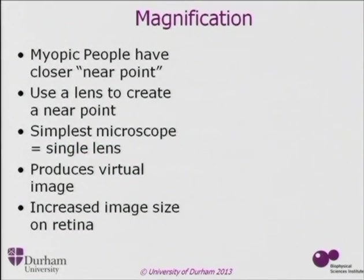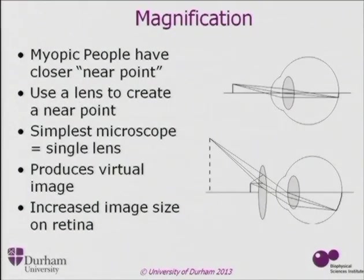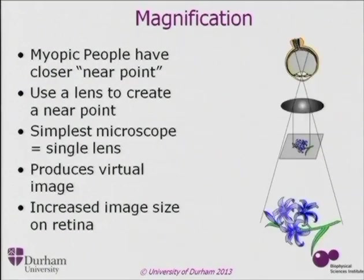How do we do magnification? People who are short-sighted are actually better at magnifying because the near point of their eye is closer, making the image appear bigger. You then use a lens to bring the near point in — the lens shifts the near point and increases the image size on the retina. In a microscope, the lens makes the sample appear as though it's coming from further away but much bigger, covering more of the retina.